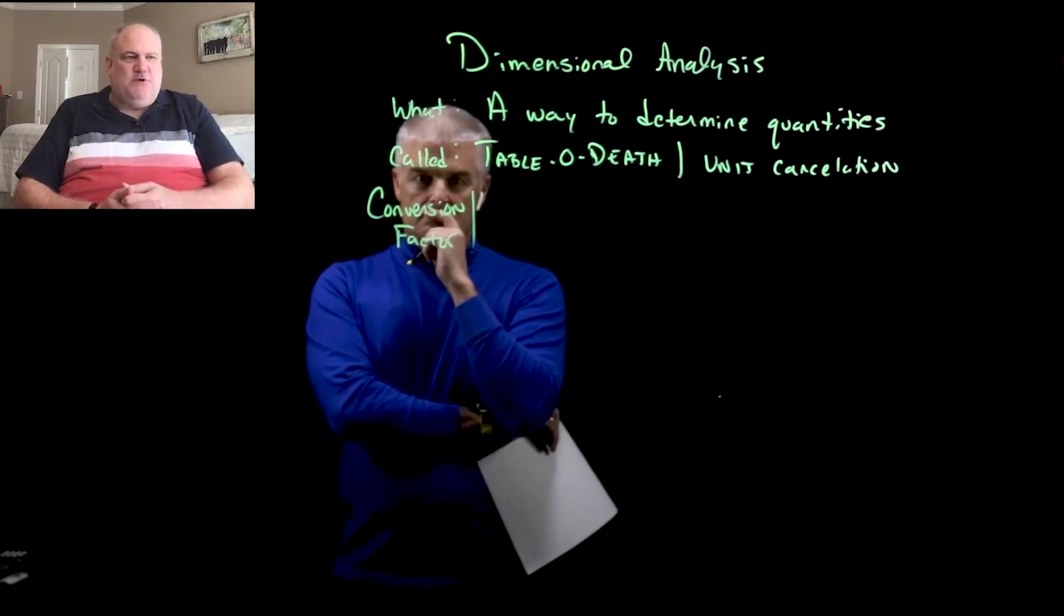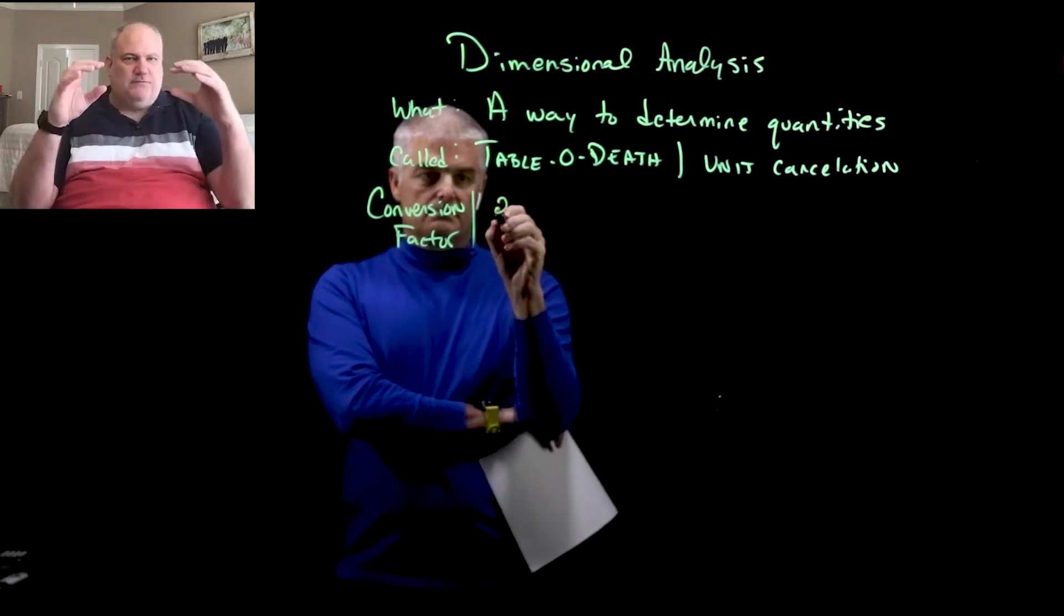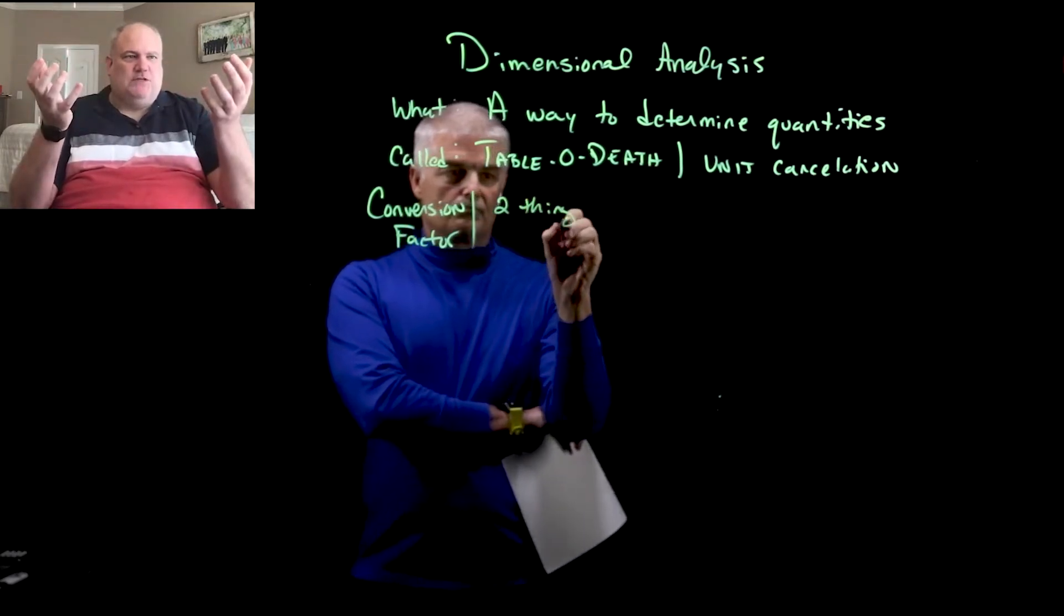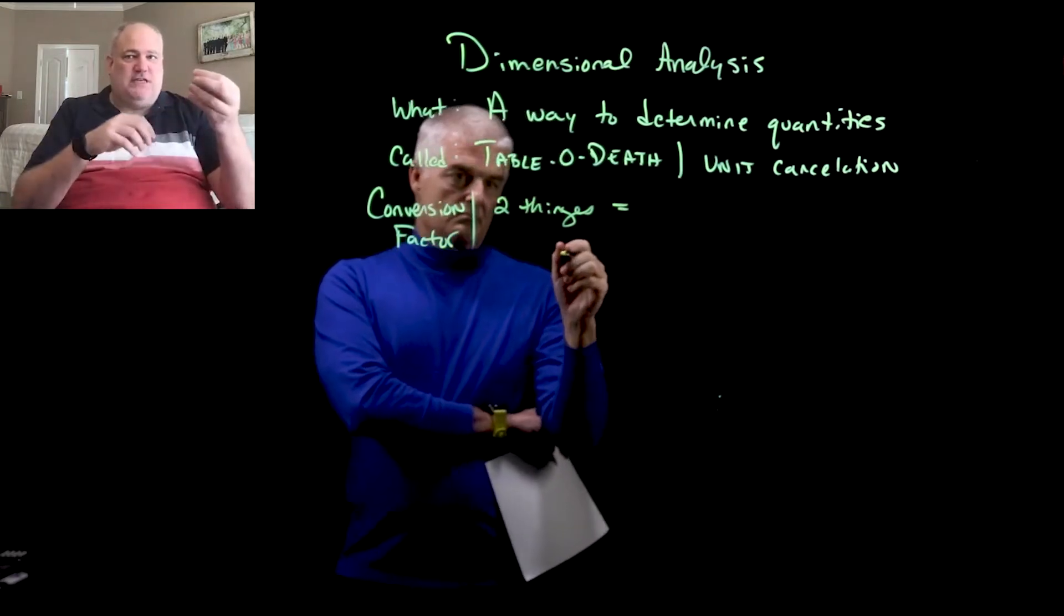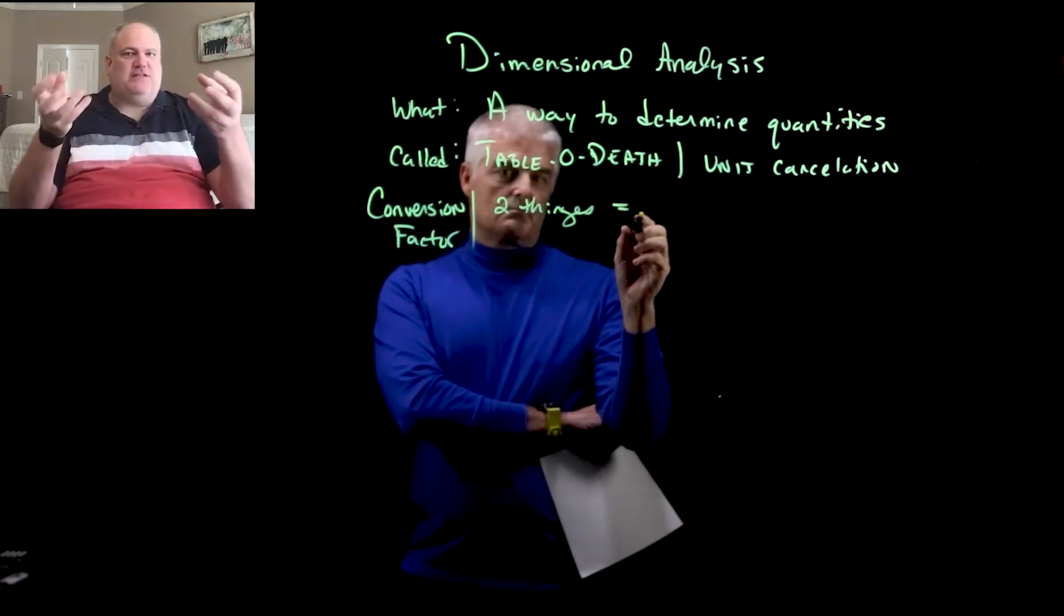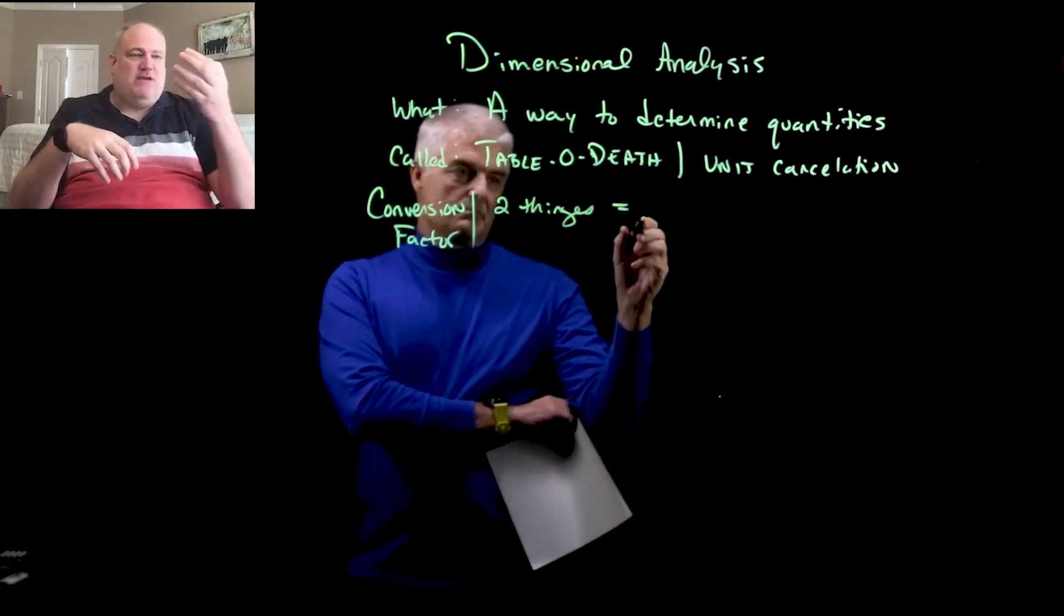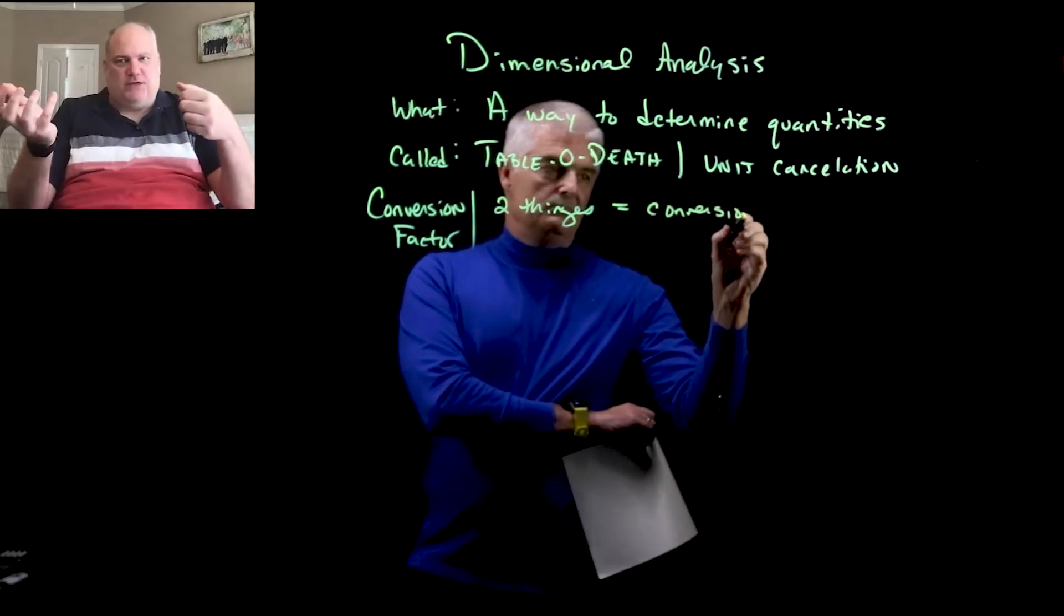And a key term that's really important is this thing called a conversion factor. What's a conversion factor? Well, the way I look at it, and the easiest way to think of it is, anytime you have two things that are equal to each other, that's a conversion factor. So, for example, if I say one foot is equal to 12 inches, that is a conversion factor, which means if we know how many of one of the things we have, we know how many of the other things we have.